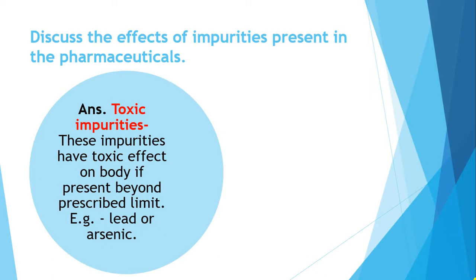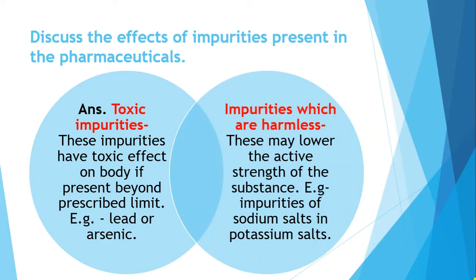For example, suppose you are daily running three kilometers — that is fine. But if you go beyond your limit, say 15 kilometers, that becomes excessive. Similarly, toxic impurities present beyond the prescribed limit cause a toxic effect on the body. Examples include lead or arsenic — limit tests exist for both in practicals and a particular limit is prescribed for each.